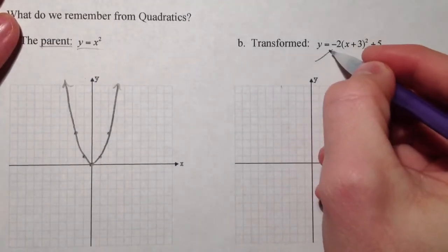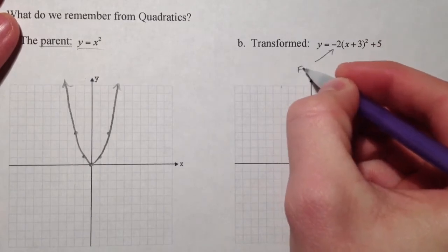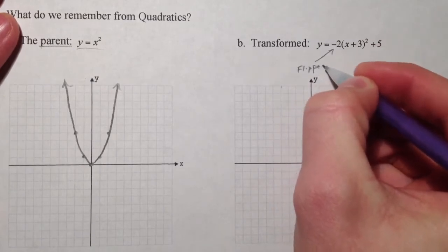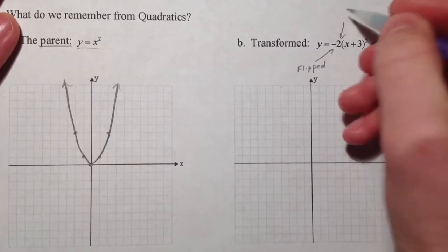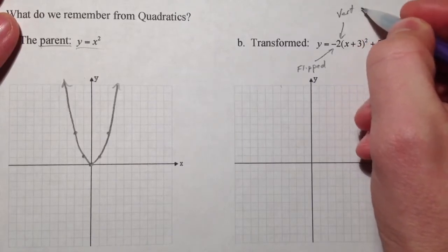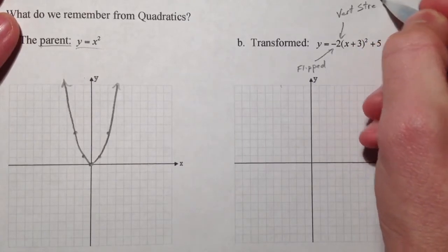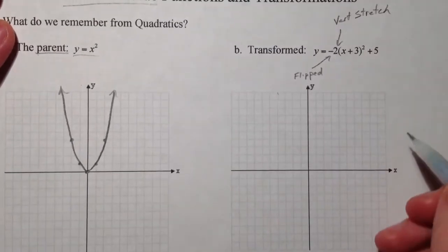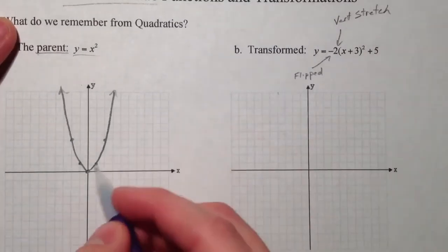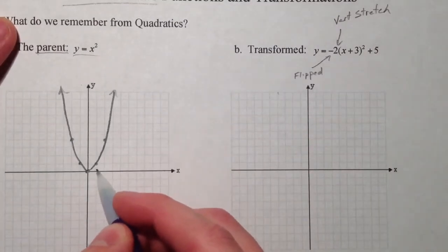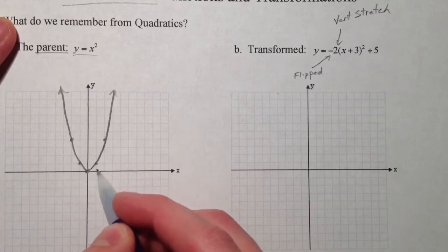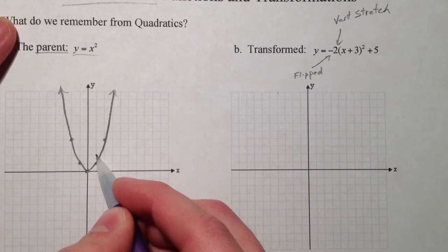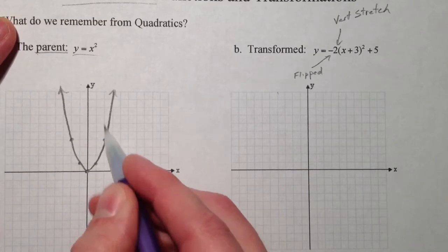For example, this negative flipped it, and this 2 was a vertical stretch, which, everything was multiplied by 2, so all of these changes, where it was left and right 1 and up 1, it went left and right 2 and up twice as high, 2, up 4.